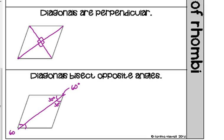If one angle is 60 degrees, then the consecutive angle is 120 degrees, because consecutive angles in a parallelogram are supplementary — they add to 180 degrees. When we bisect that 120-degree angle, we get 60 degrees. Combined with the perpendicular diagonals, we get 30-60-90 triangles within this rhombus.